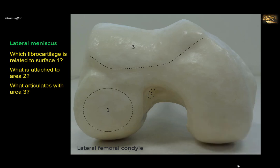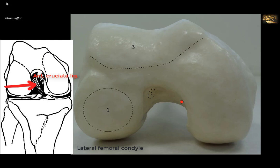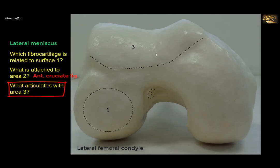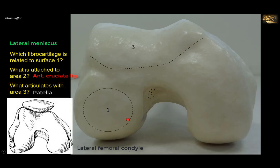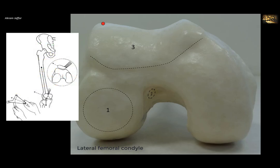What is attached to area 2? Area 2 is on the inside of the lateral condyle of the femur — this is where the anterior cruciate ligament is attached. The posterior cruciate ligament attaches to the inside of the medial condyle of the femur. Surface 3 is the patellar articulation — between the patella and the femur. Note that the distal end of the lateral condyle is more circular, while the medial condyle is more oval-shaped. The lateral condyle is more prominent anteriorly to prevent lateral dislocation of the patella, allowing identification of medial versus lateral sides without looking at the femoral head.